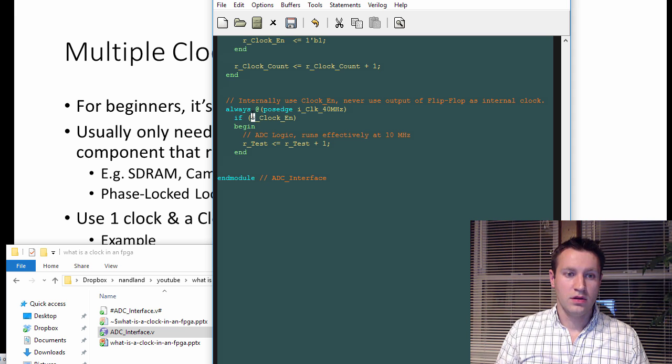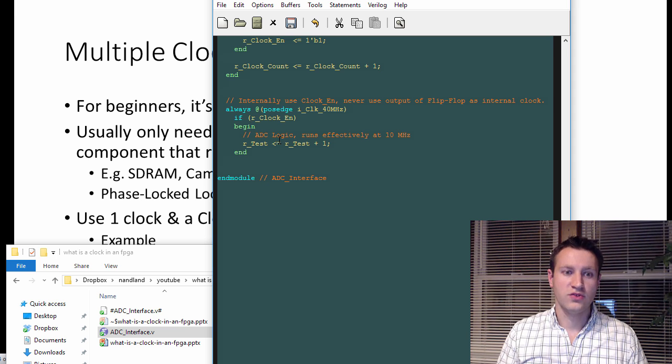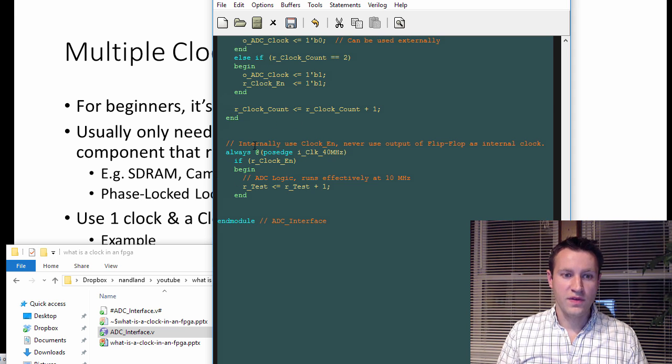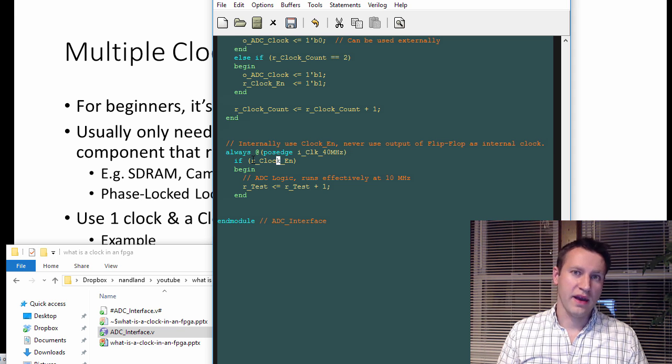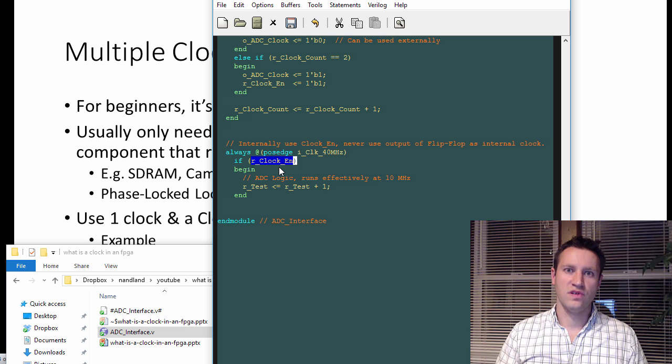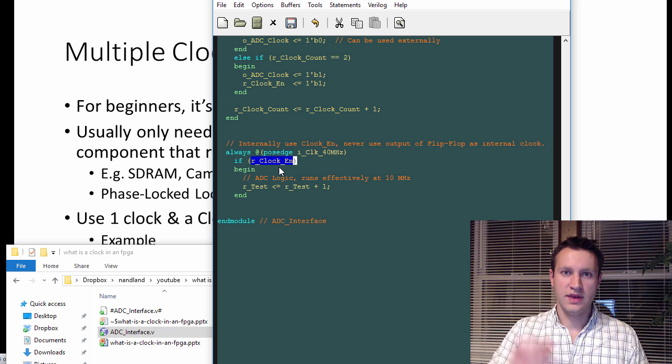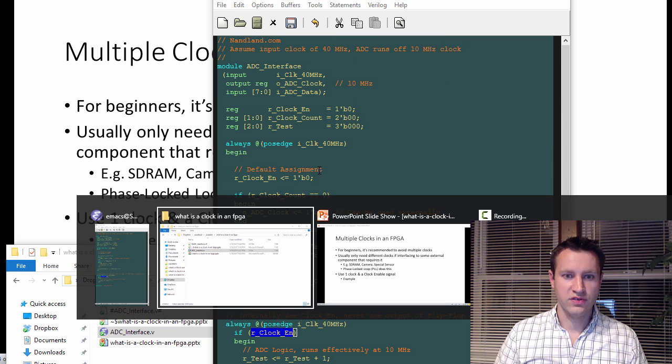If your ADC changed and you went to a 20 megahertz ADC, this always block would look exactly the same. It's just the frequency of our clock enable would double. Or if you went to a 40 megahertz ADC, our clock enable would always be high and it would run the exact same. So that's the beauty of clock enable too, is that your code pretty much stays the same. The only thing that changes is how often that clock enable gets pulsed. And so I did simulate this code so you can actually see it on this fantastic website called edaplayground.com.